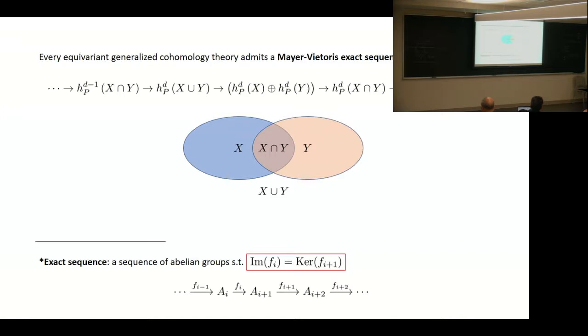We'll use the following fact: every generalized cohomology theory admits something called a Mayer-Vietoris exact sequence, something like this. For those of you who haven't heard of exact sequence, it is a sequence of maps between abelian groups such that the image of the previous map is the kernel of the next map.